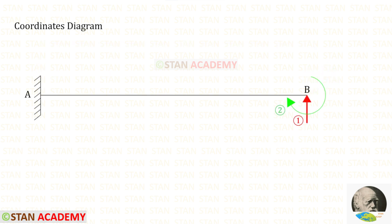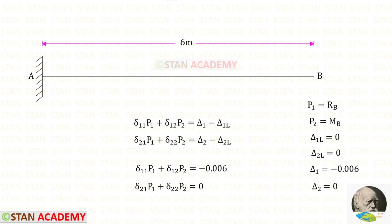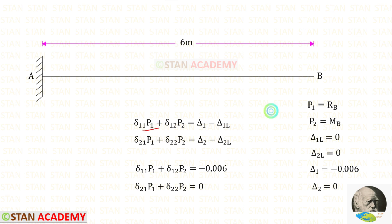Now let us make the coordinates diagram. Let us keep RB as the first coordinate and moment MB as the second coordinate. We have two compatibility equations with additional terms δ1 and δ2. Since there is settlement in the beam, we have to include these two terms. P1 is RB and P2 is MB. In this beam there is no load, so δ1L and δ2L will be equal to 0.